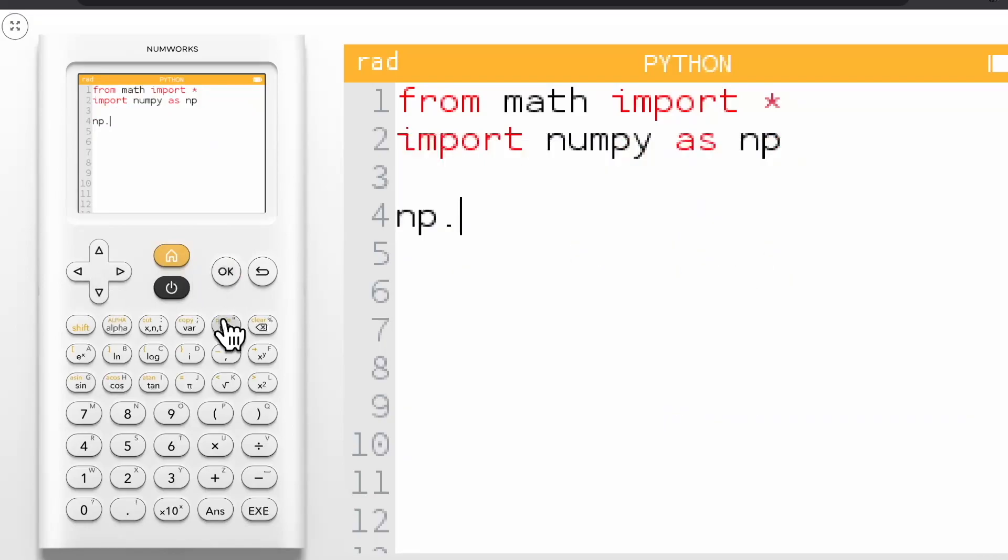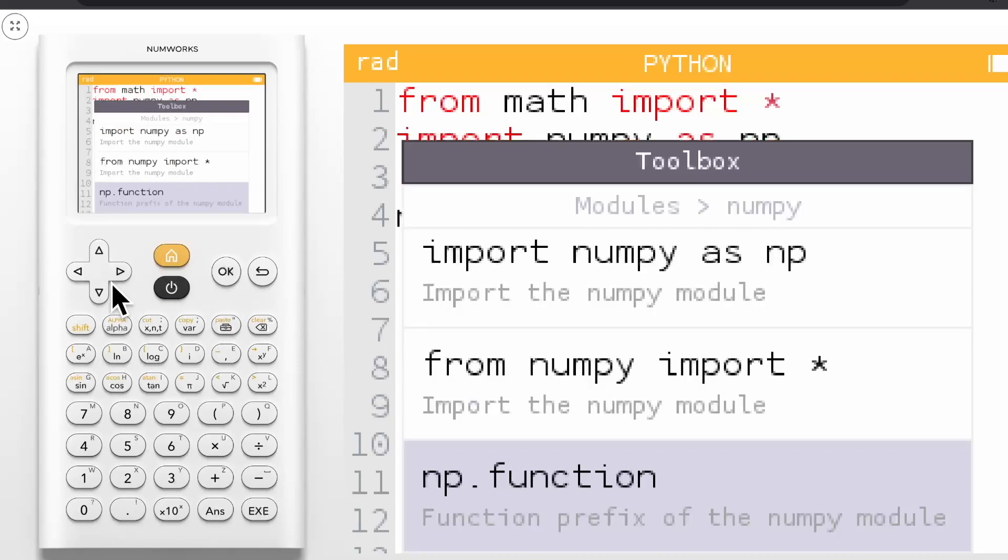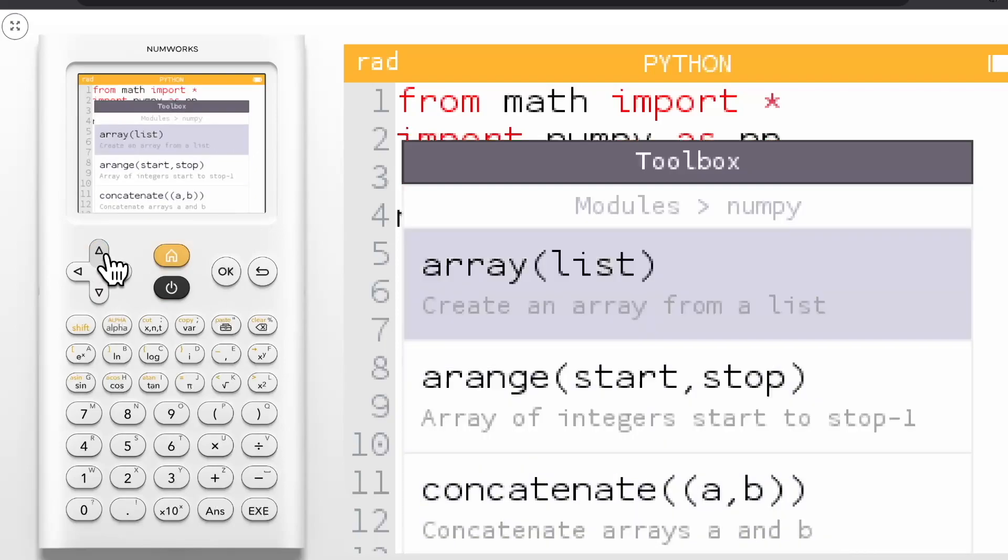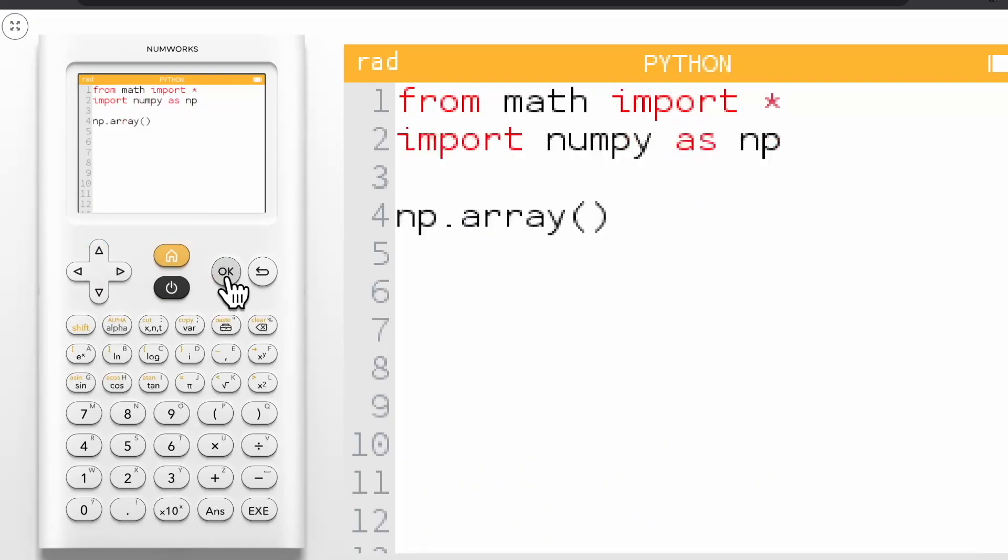Going into the Toolbox a final time, navigate down to see functions compatible with NumPy. For this example, let's select the array function. You can now fill the array and store it to a variable to be used in your script.